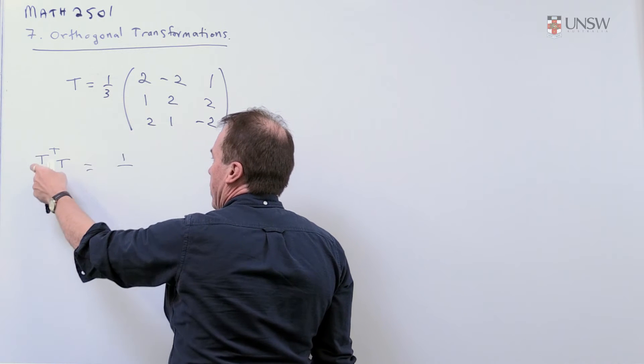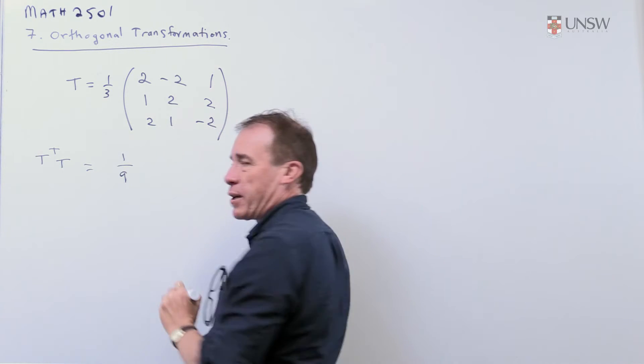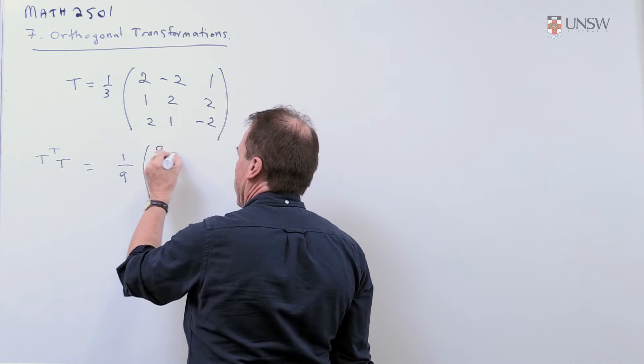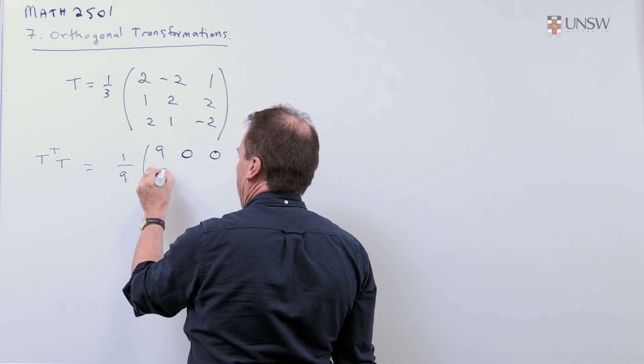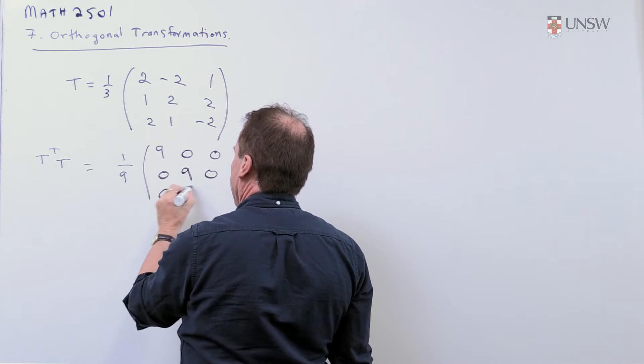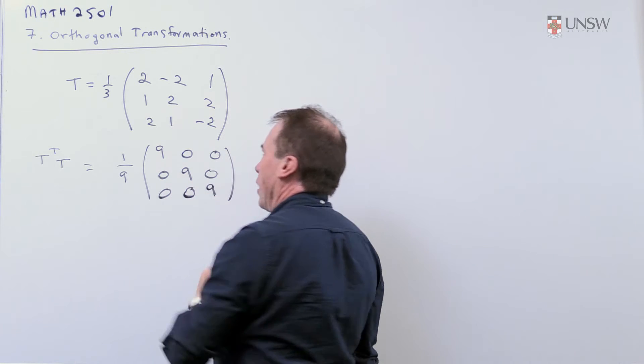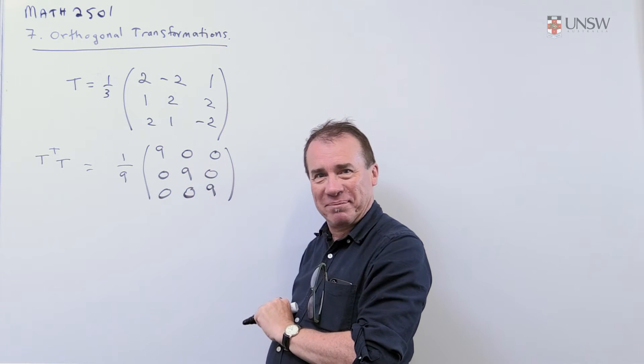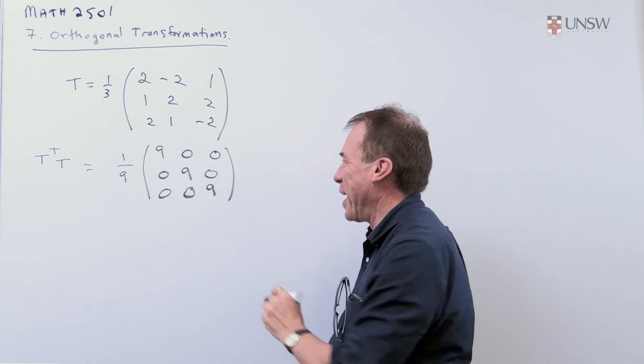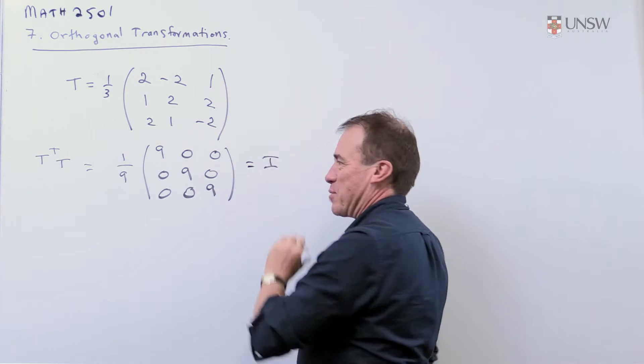When I multiply this by its transpose I'll have a factor of 1 over 9 coming out. I know it's going to be the identity when I divide by 9. So I do the arithmetic mentally and I just write that down and that's equal to the identity matrix.